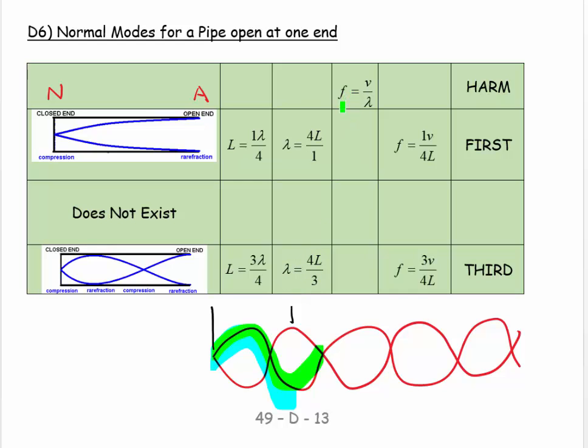If I take these two and say F equals V over lambda, so F is equal to V times the upside down of this, 1 over 4L. And for the second diagram, F is equal to V times, well it's going to be 3 over 4L.